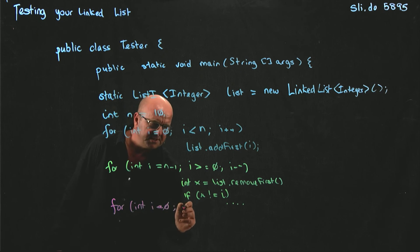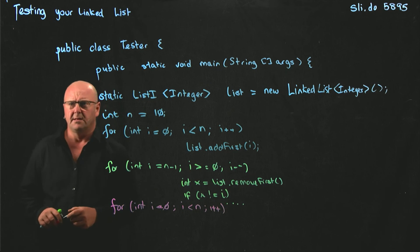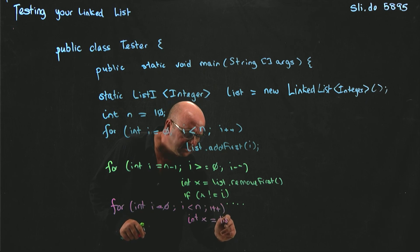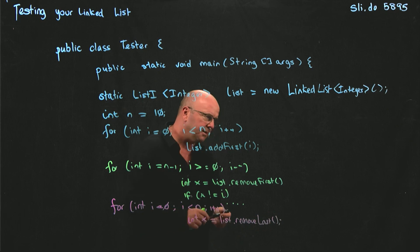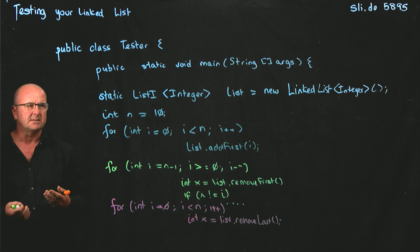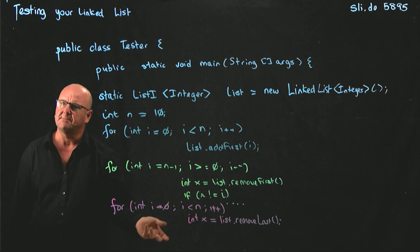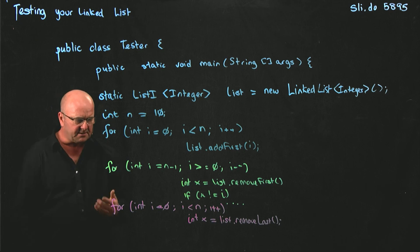We could start with i equal to zero and increment i. And then we can call int x is list.removeLast. So we can check our remove first and we can check our remove last methods. Are they doing what we expect? And of course we could change our list.addFirst to list.addLast and do the same thing. Don't forget to check your size counter after you're done adding and removing. Is your current size correct?